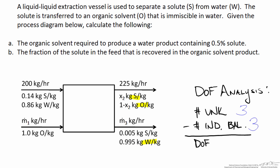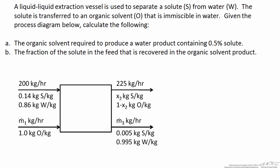Technically we can also write a fourth overall mass balance, but the total mass balance is not independent from the species balances, as it can be derived by summing up the species balances for every species in the system. So with three unknowns and three independent balances, we are left with zero degrees of freedom. In principle, we have enough information to solve for all three variables on this process chart.